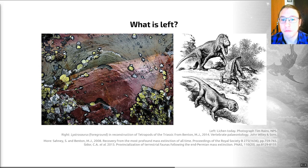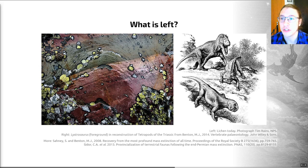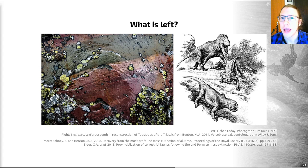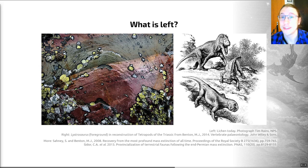There's evidence of provincialisation of terrestrial faunas following the end-Permian mass extinction — species become more fragmented and their ranges become smaller across this transition period. That is the end of this video, and we'll be back in video number four, a slightly longer video, looking at the five big mass extinctions of the Phanerozoic.